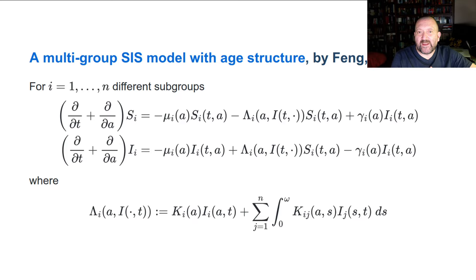I talked some time back about the force of infection, and here we see a use of the force of infection. This term here, lambda I of A and I of T, is the force of infection that applies to individuals in group I who are of age T and A. We compute this by using some kernel plus the contribution of all the others, J being the groups.